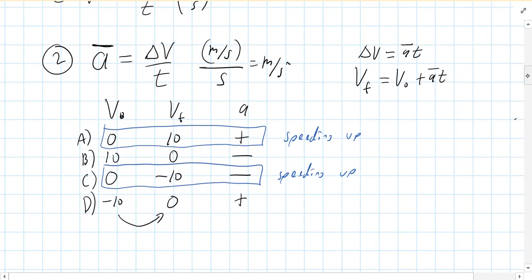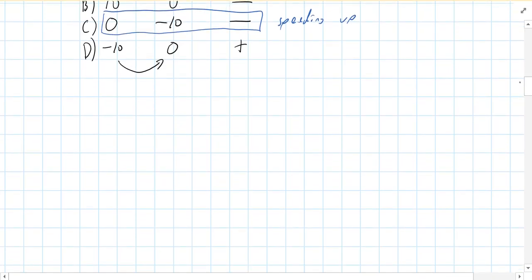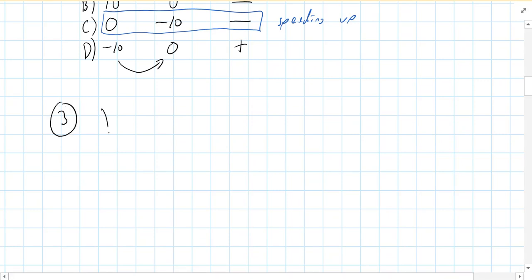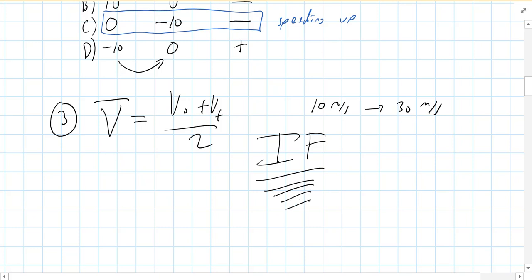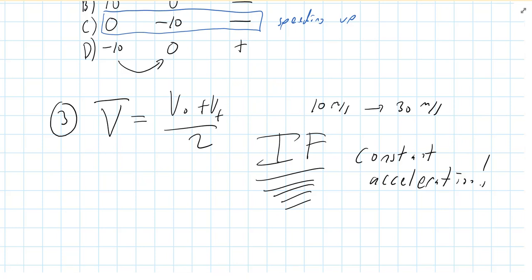In addition to those equations, there are several others you may have learned. The third one is another definition for average velocity — very simple: V naught plus V final over 2. It's the average of your starting and final velocity. For instance, if you were moving at 10 meters per second and sped up to 30, your average is 20. But there's a big 'if' here — this equation is only true if you have constant acceleration. If you accelerated from 10 to 30 meters per second at a constant rate, then this equation is valid.